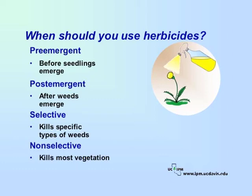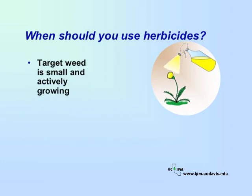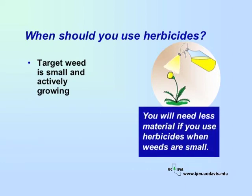Apply post-emergent herbicides when the target weed is in the stage most sensitive to the product — usually when the weed is small and actively growing. Monitor regularly so that you know when the weeds are emerging and actively growing. If you use herbicides when weeds are small, you will need less material. In schools, herbicide use is usually limited to times of the year when school is not in session, such as summer or holiday vacations.